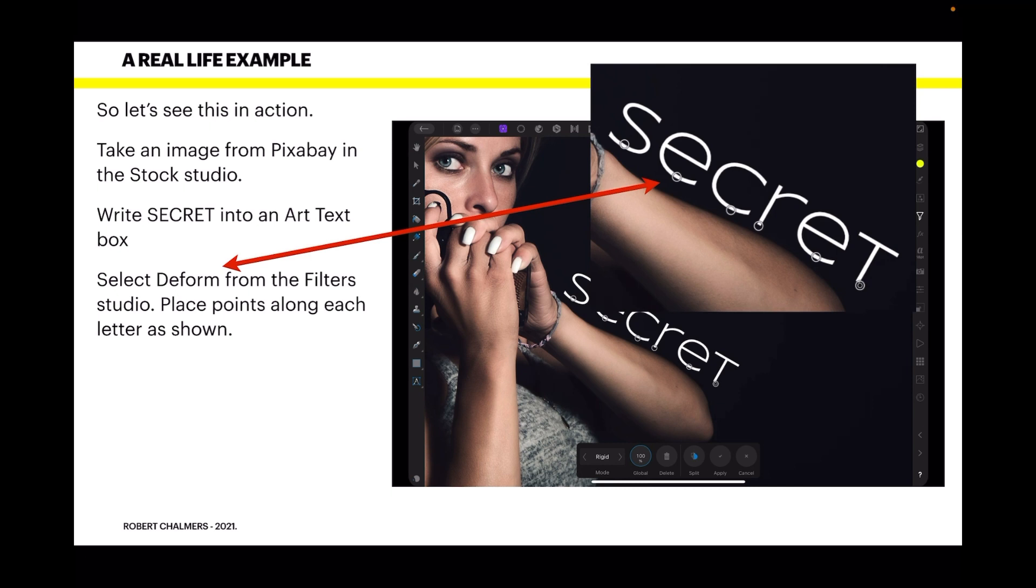where I've selected the form from the filter studio and placed points along each letter as shown. So all the letters of secret, I've got a deformed point sitting on the bottom. What this means is I can drag each of those letters progressively towards the shape of the girl's arm.